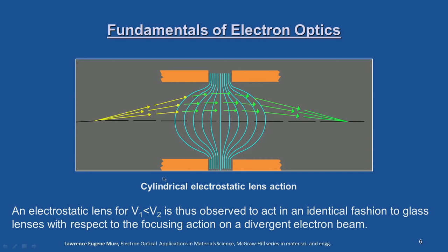This schematic clearly shows the cylindrical electrostatic lens action — the electron beam enters, the diverged beam passes through the electrostatic field, and it gets converged. The converging action of the electrostatic lens is clearly demonstrated. An electrostatic lens where V1 < V2 acts in an identical fashion to glass lenses with respect to the focusing action on a divergent electron beam.